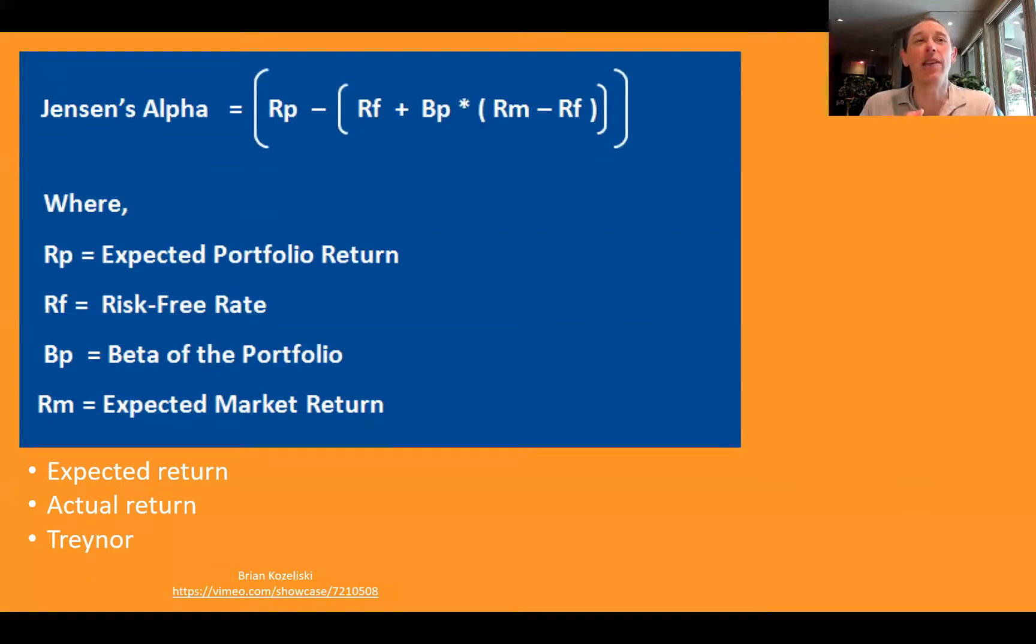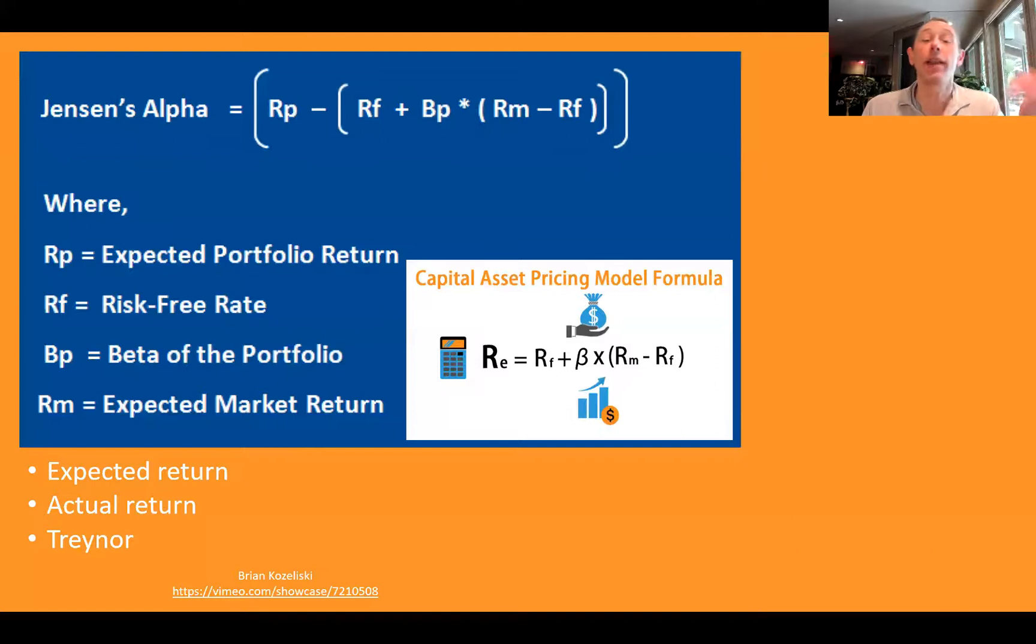Another measure is Jensen's alpha. Here we've got the return of our portfolio. And then we're going to subtract this big quantity. Well, that big quantity looks an awful lot like CAPM. So let's go back to CAPM here. There's a CAPM formula. Here we're saying that, well, maybe this isn't going to be equal. So in the event that the return doesn't match the predicted return of CAPM, that's not equal.